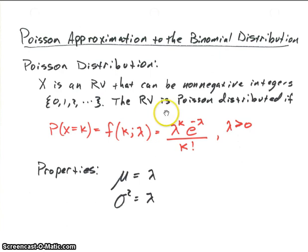Now, the random variable is Poisson distributed if it has this following distribution function. And we're dealing with discrete random variables, so the distribution function f will be equal to the probability that x is equal to k, k being one of those non-negative integer values.